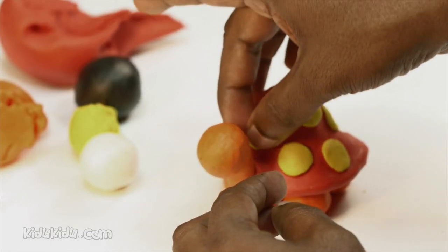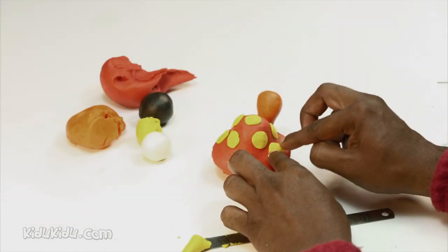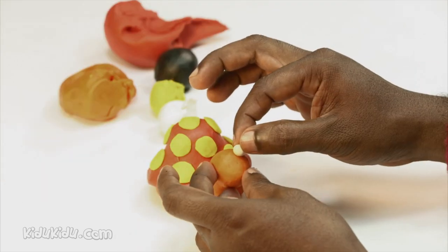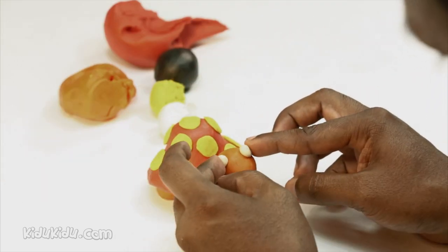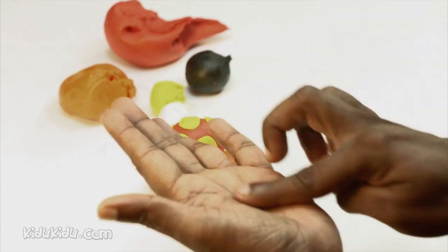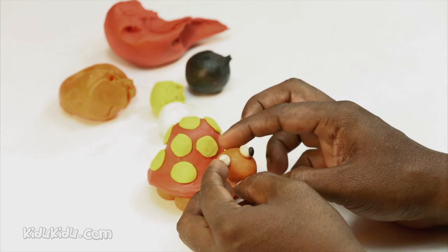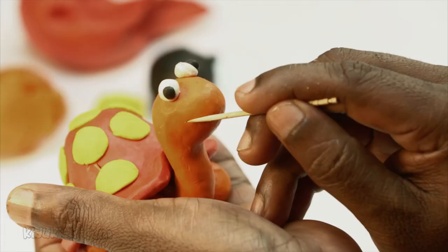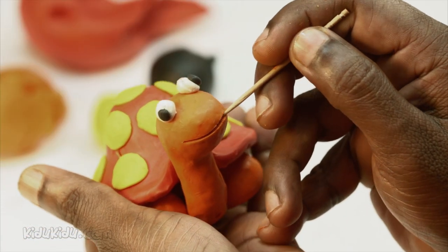What do you think? A jazzy reptile, isn't he? Now make the eyes by adding little black dots to the small white balls. Perfect! Okay, now draw in a mouth with a toothpick or even the point of a pencil.